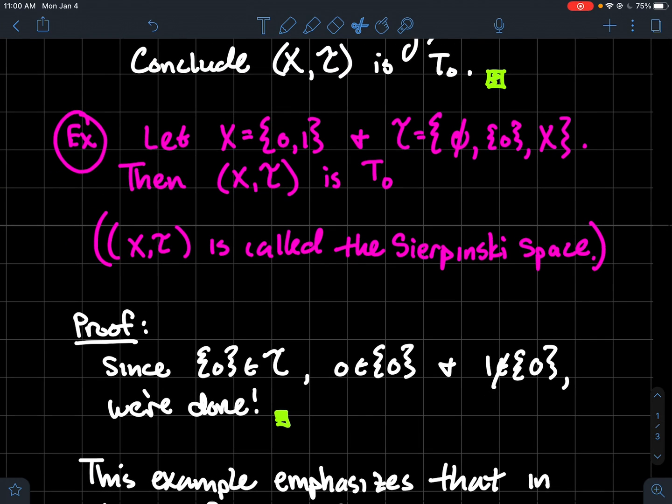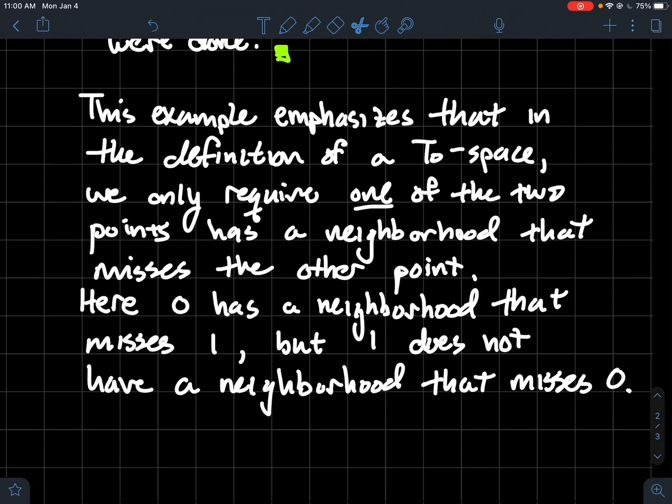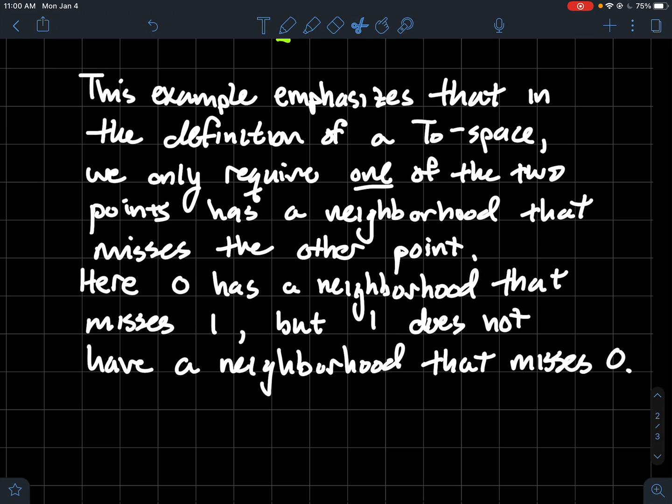Therefore, it's not possible for 1 to have a neighborhood that misses 0. So again, we only require that one of the two points has a neighborhood that misses the other point. Not that each point has its own neighborhood that misses the other point.